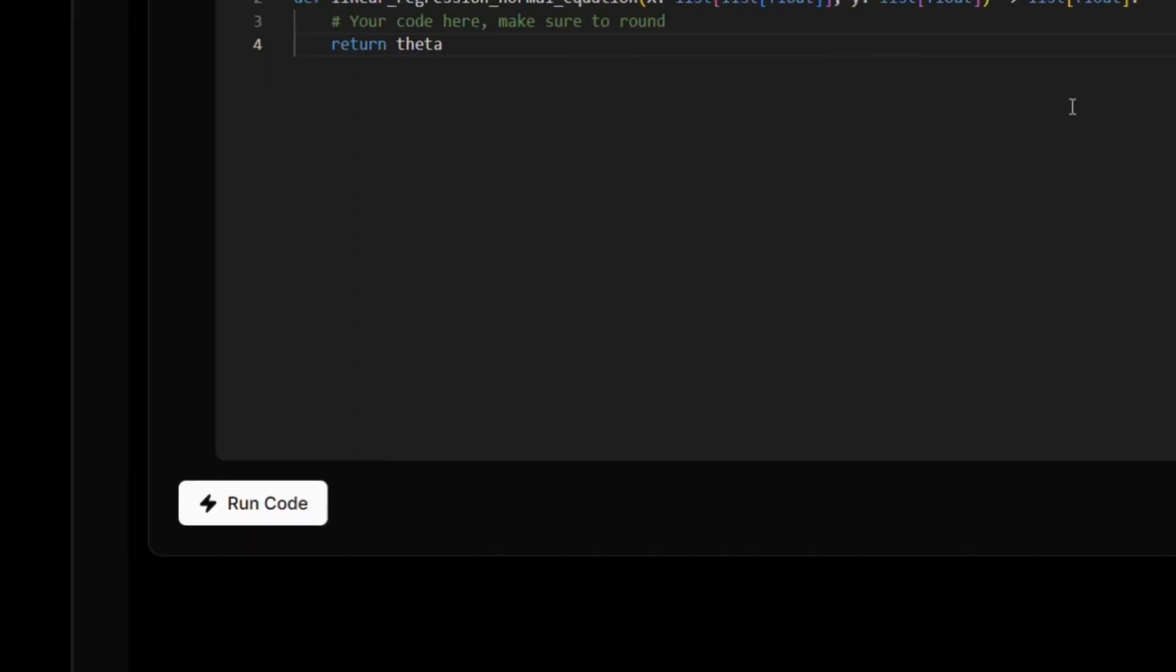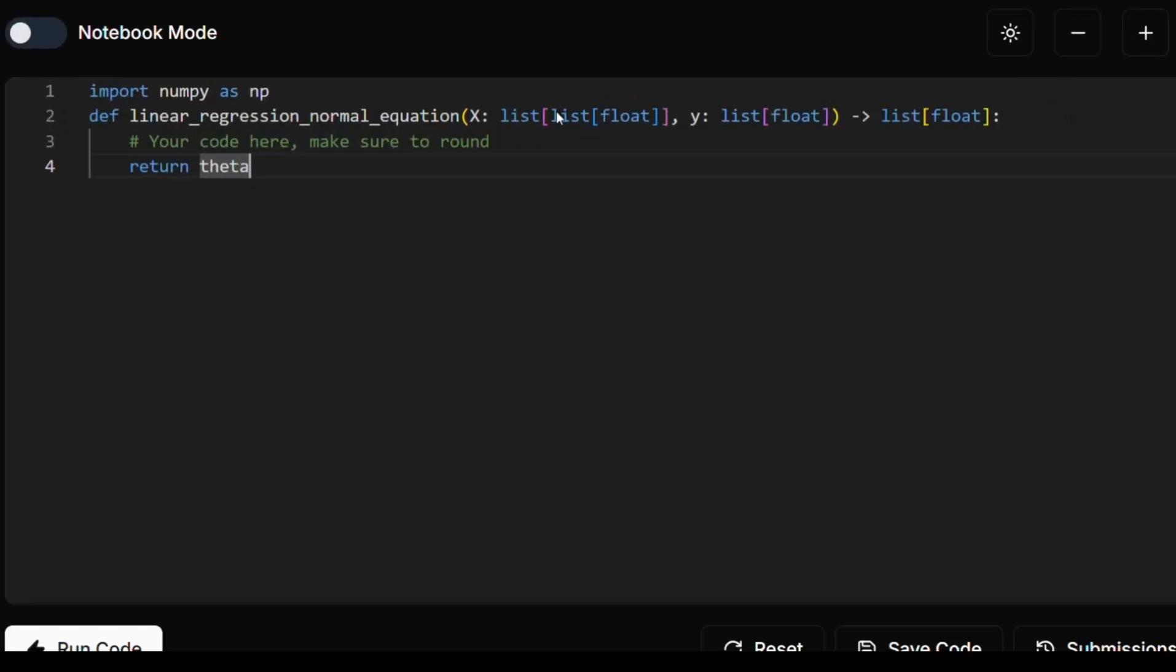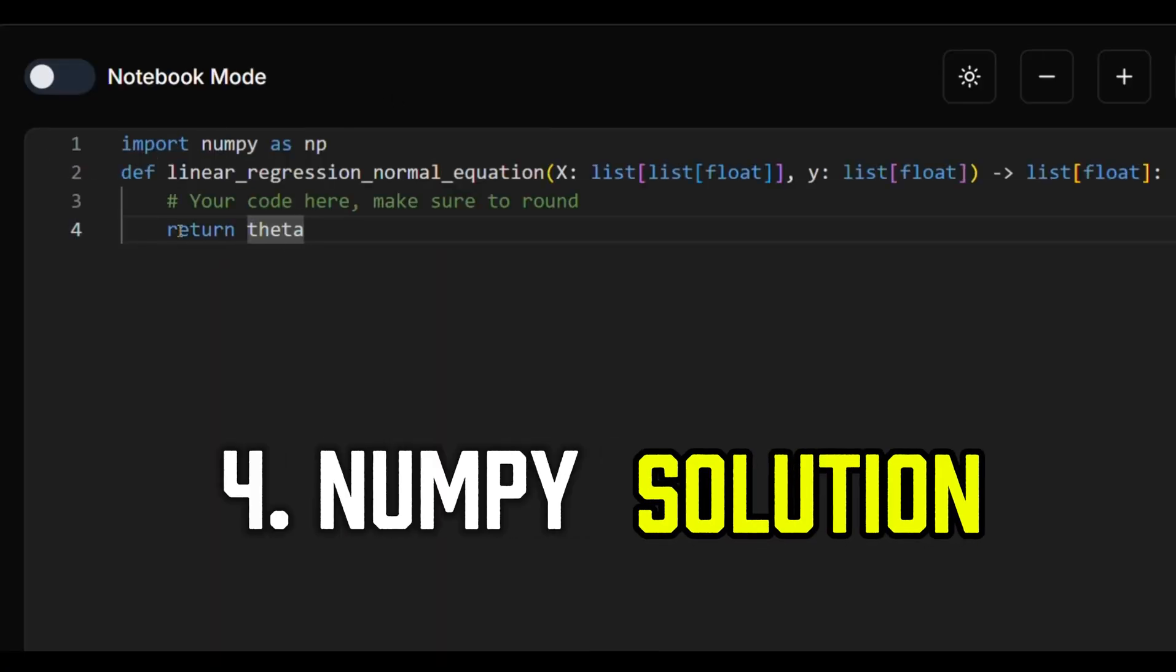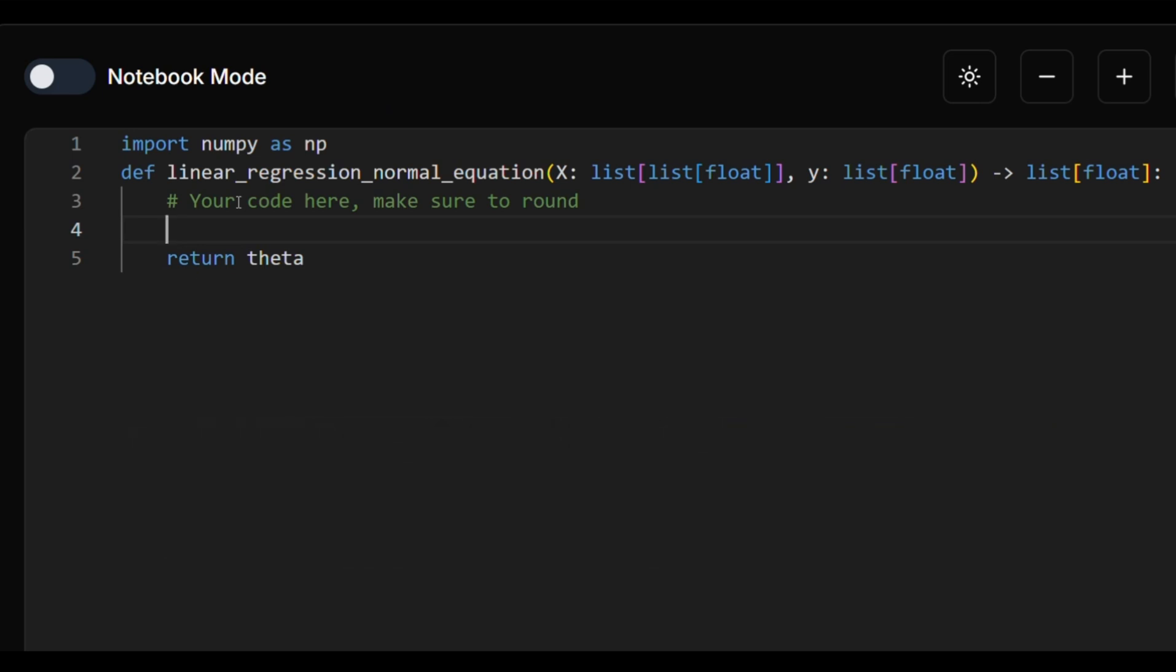So let's close this, and we'll get straight to coding. What we need to do here, we're only going to use NumPy, we're not going to do a native Python solution. First thing we need to do is convert our x and y into NumPy arrays. So x is going to be a NumPy array, and y is also going to be a NumPy array. And now we just need to write this equation.